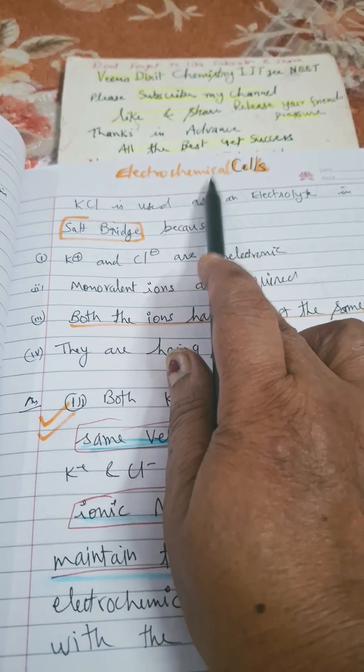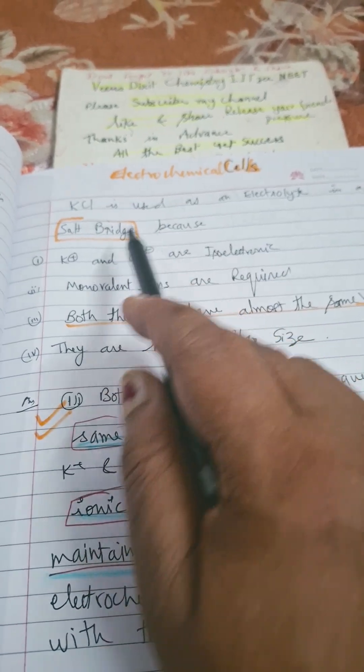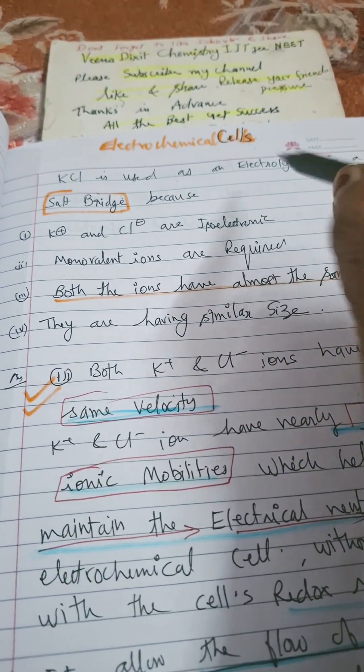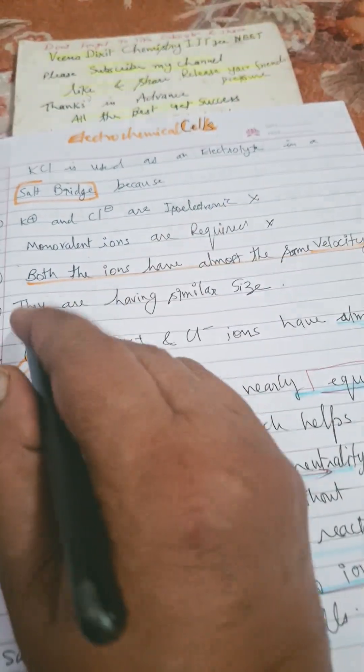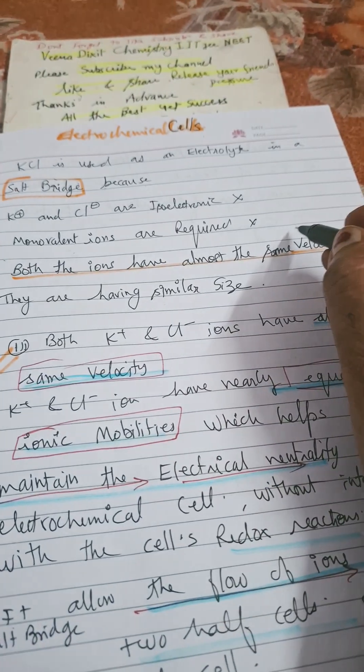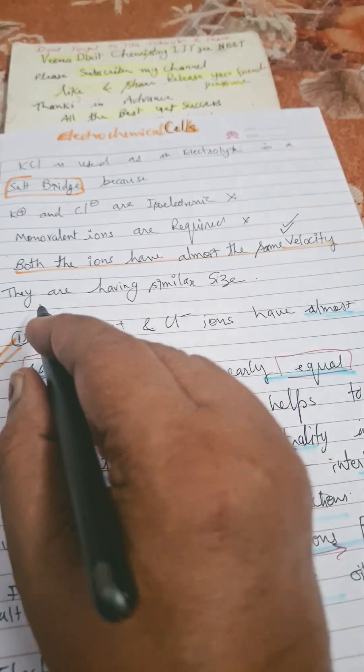So the options are: K+ and Cl- are isoelectronic, monovalent ions are required, both ions have almost the same velocity. Yes, of course, they are having similar size.